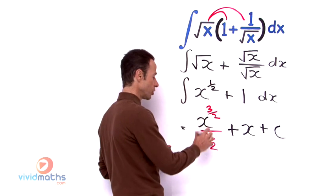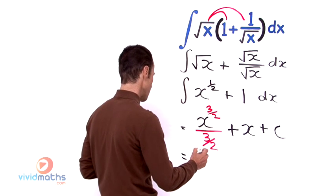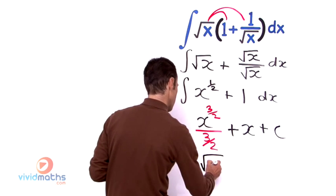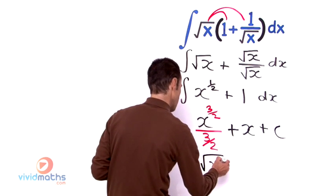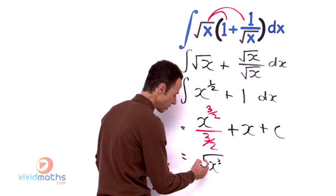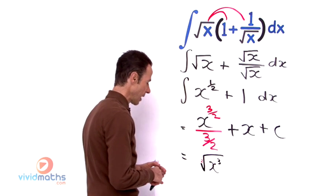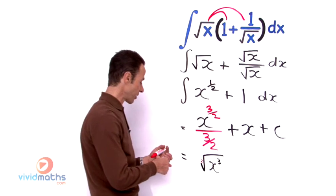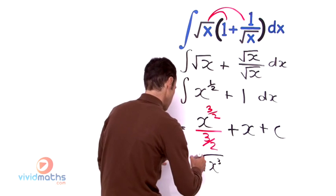We got x to the power of 3 on 2 which means it is going to be the square root of x cubed. So that will be the square root of x cubed. And we flip the 3 on 2 upside down because we are dividing by it so that will become 2 thirds.